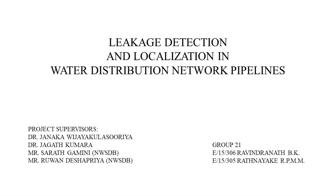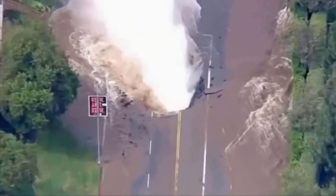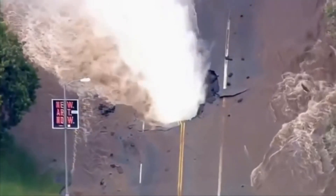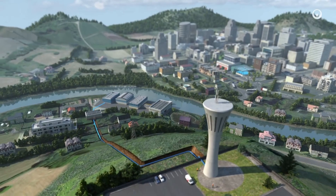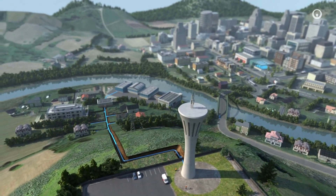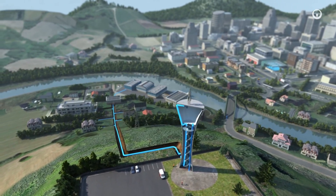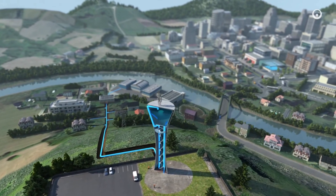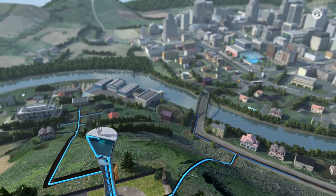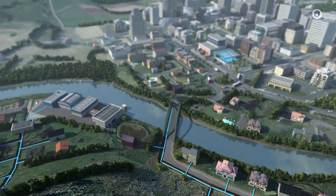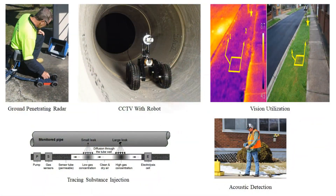Leakage Detection and Localization in Water Distribution Network Pipelines. Underground water distribution pipelines periodically lose a significant amount of water transmitted through them. An innovative methodology is introduced using advanced signal processing techniques for seismic acoustic emissions of water leakages, to make the leakage detection procedure more accurate, convenient, and economical. Multiple technologies have been developed throughout the years to help identify and locate leaks within water distribution networks.